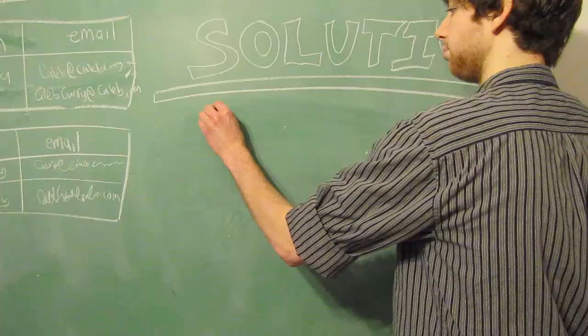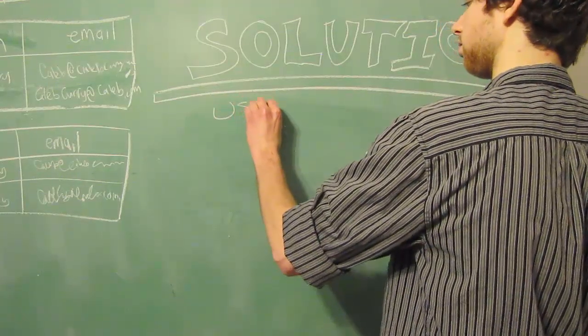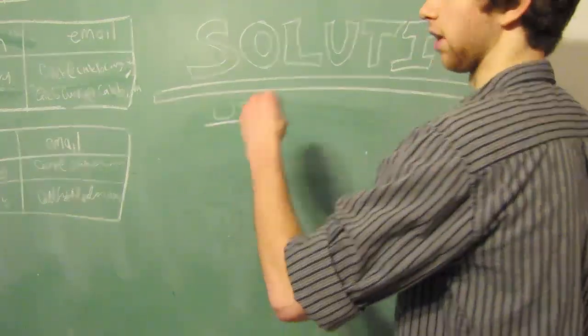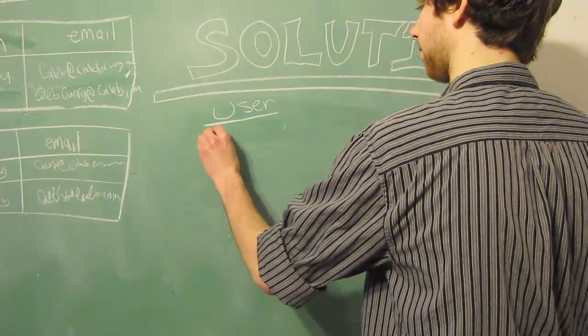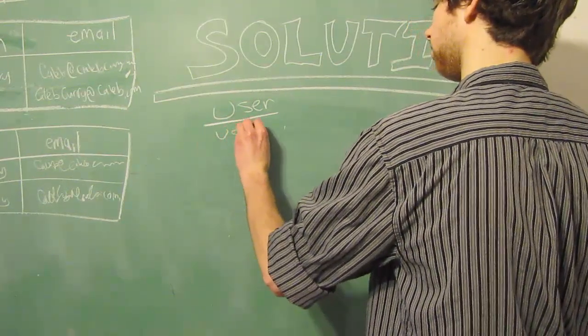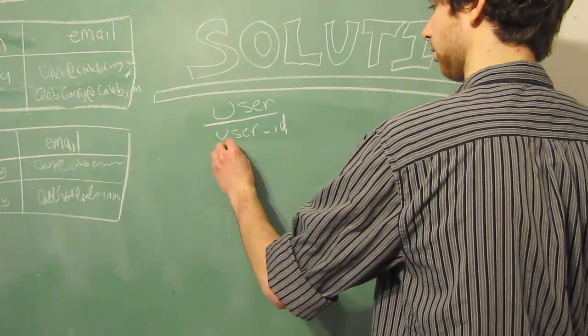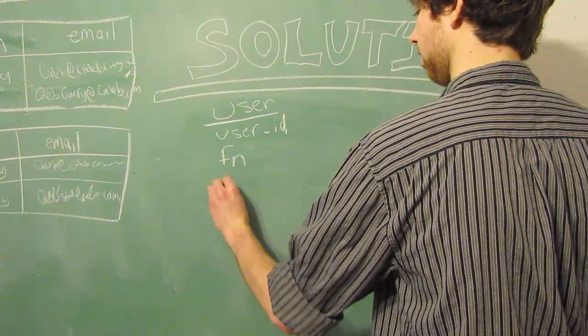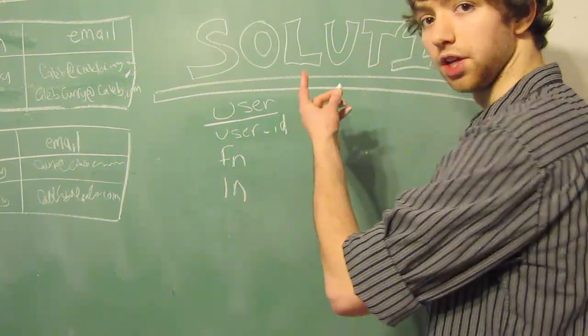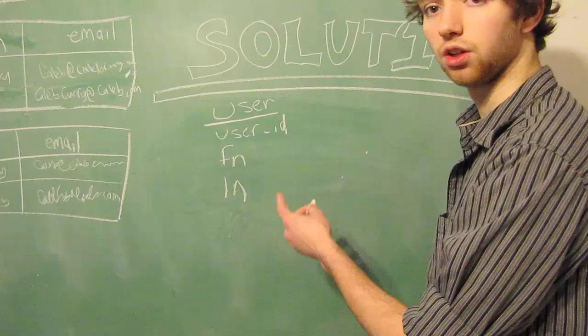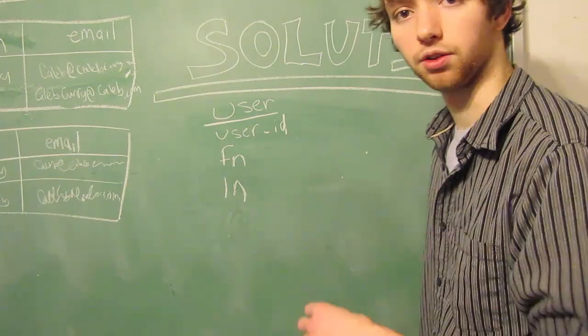The best solution for this problem is to have a user table, and I'm going to write the columns that are within this user table. So we would have a user ID, then we're going to have a first name, and we're going to have a last name. If you wanted the address in there, you could have street address, state, country, all that other good stuff.